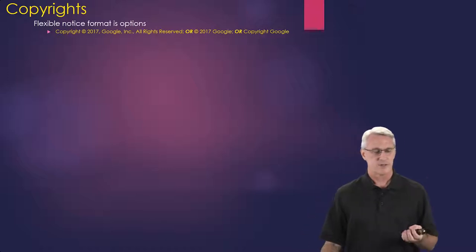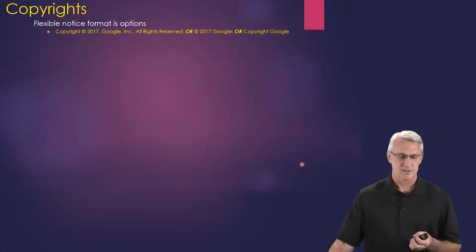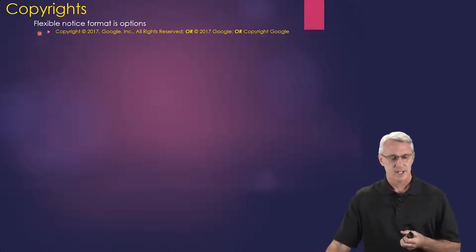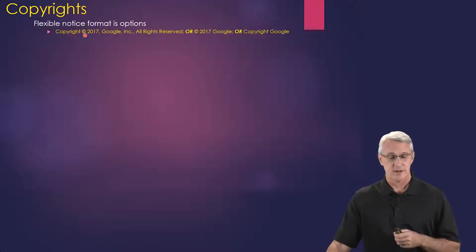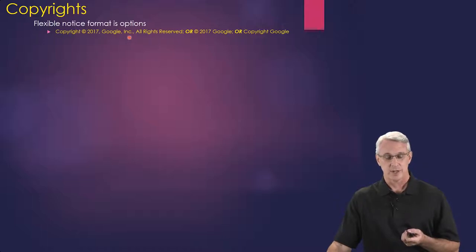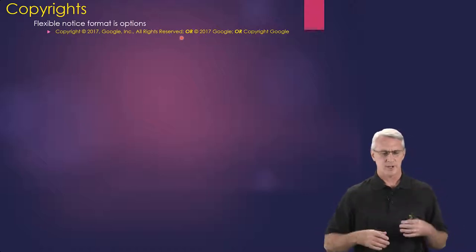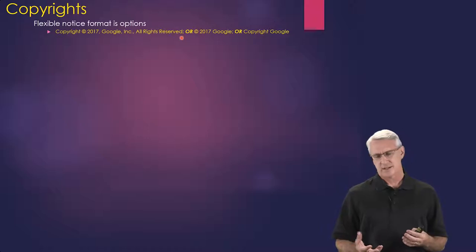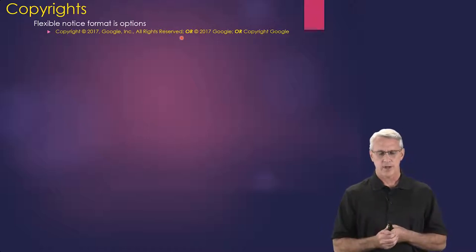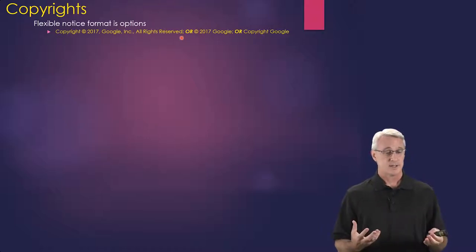There are several different ways you can format this. For example, you could say 'Copyright' with the circle C symbol, '2017 Google Incorporated, all rights reserved.' That's about as formal as it gets. That format works great for a book, a CD, a website, or even software.